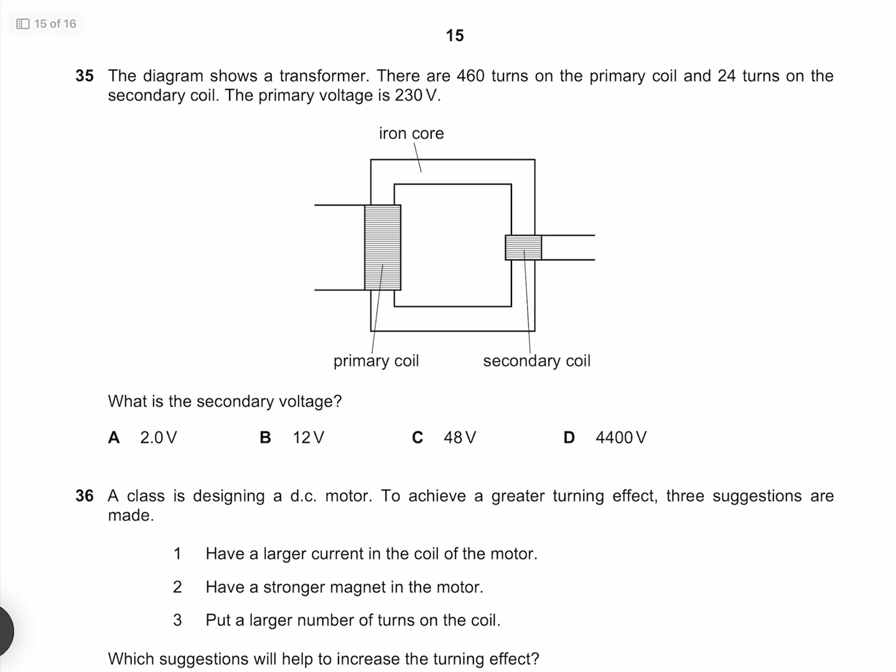The diagram shows a transformer. There are 460 turns on the primary coil and 24 turns on the secondary coil. The primary voltage is 230 volts. What is the secondary voltage? The ratio of our secondary voltage to our primary is equal to the inverse ratio of the turns. Solving that for Vs by multiplying both sides by 230 gives me 12 volts. So our answer must be B.